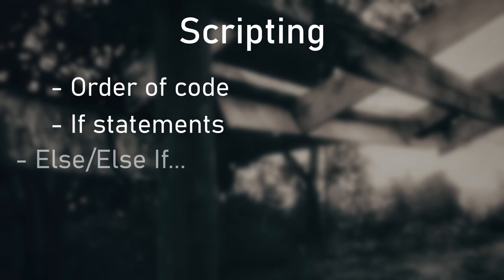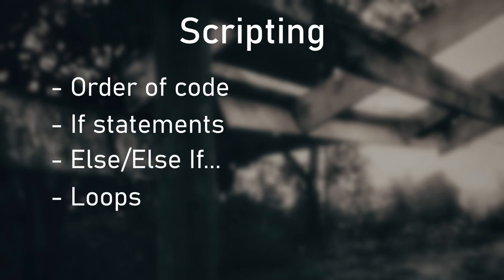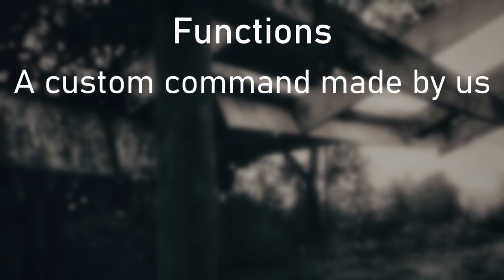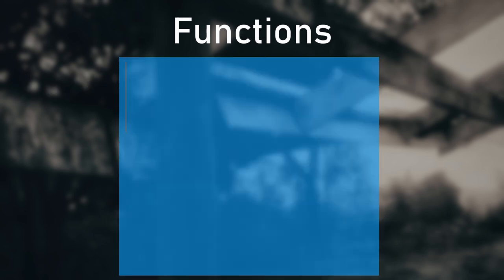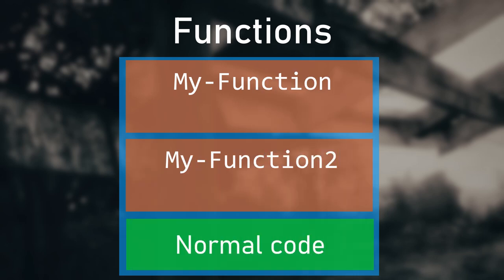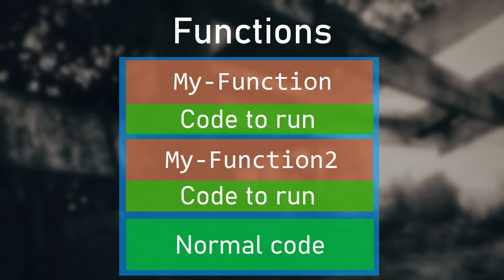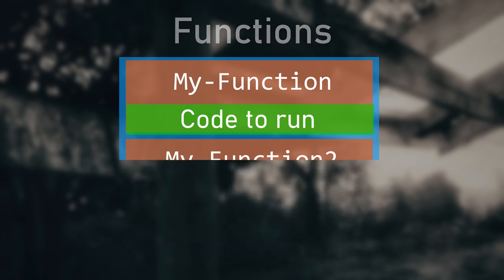In terms of scripting, we've covered running things in order, if statements, else, else if, and loops. There is only one more thing left when it comes to writing scripts, and then you'll have all the skills you technically need to make absolutely any script. The final thing we're going to cover is called functions, and it's quite cool. A function is basically a command we've made in our script — we can make our own commands that run whatever code we say when you call them.